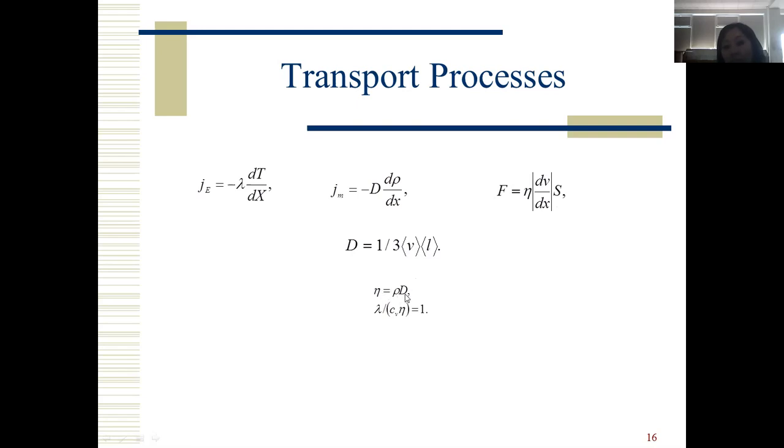In this formula, you can express the relationship through the three main coefficients. η equals ρD, where η is the viscosity coefficient, ρ is the density, and D is the diffusion coefficient. Or, λ divided by CV times η equals 1, where λ is the thermal conductivity coefficient, CV is the heat capacity, and η is the viscosity coefficient.